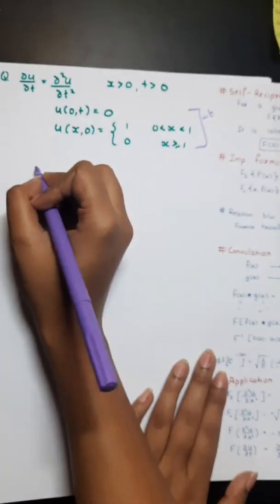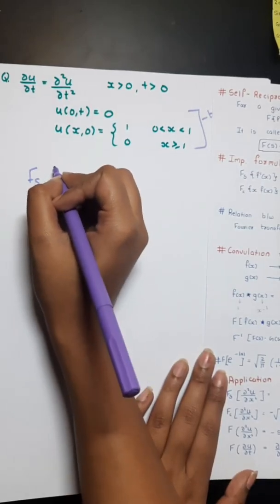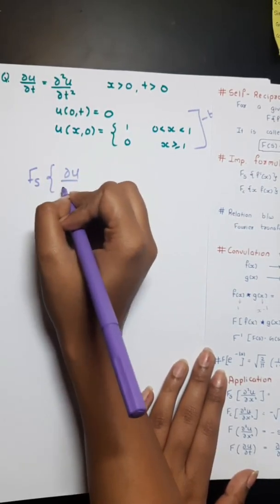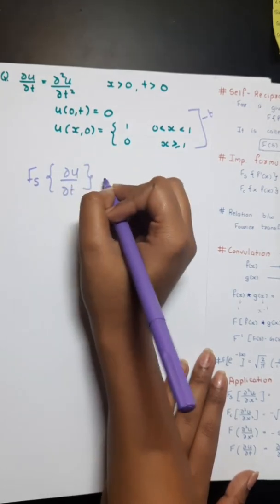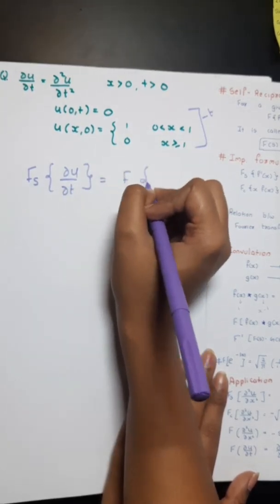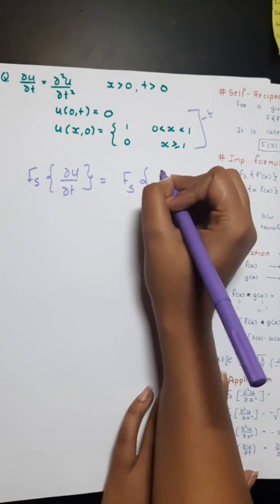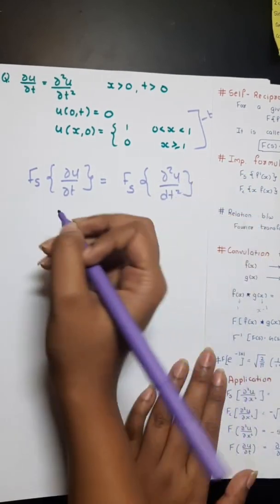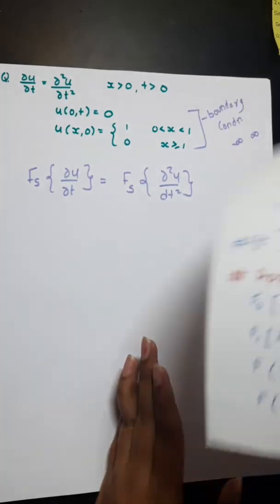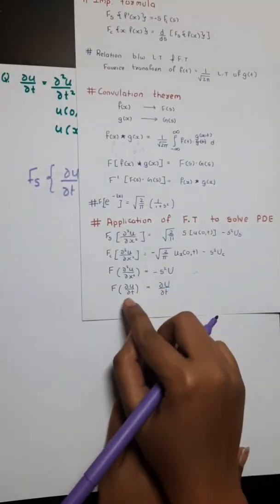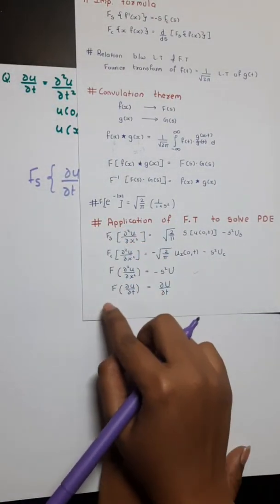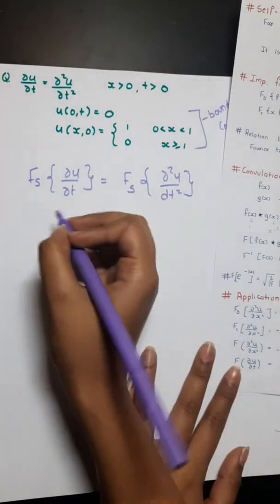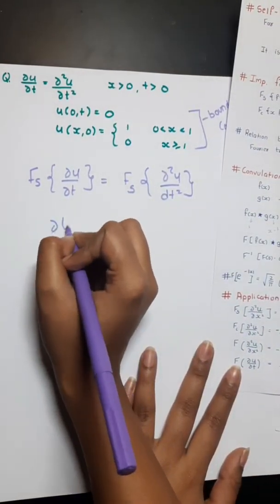Applying Fourier sine transform on both sides, we get: Fourier sine transform of ∂u/∂t equals Fourier sine transform of ∂²u/∂x². Seeing the formula list, the Fourier sine transform of ∂u/∂t is simply ∂/∂t of Ũs.